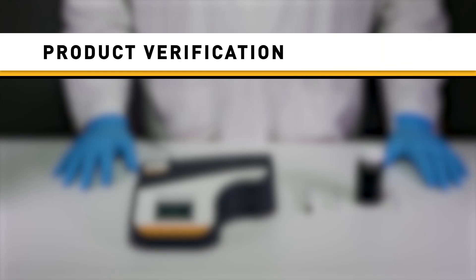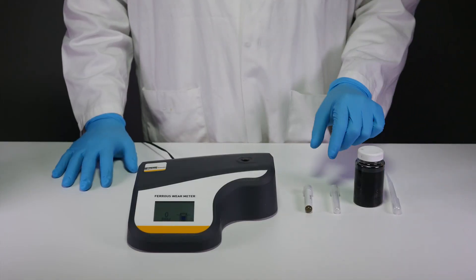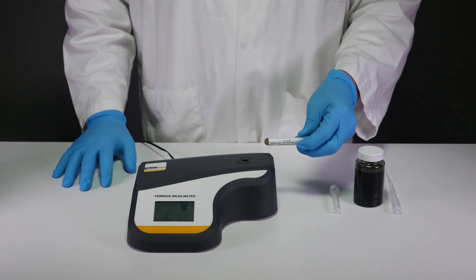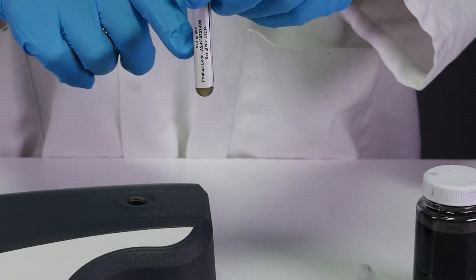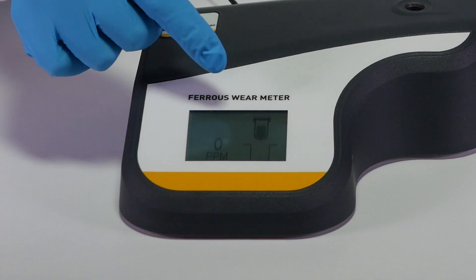Each Ferris wear meter is supplied with three check standards to verify the product on a regular basis. In this example, the 972 to 992 ppm Ferris content sample is being used. As per the on-screen instructions,